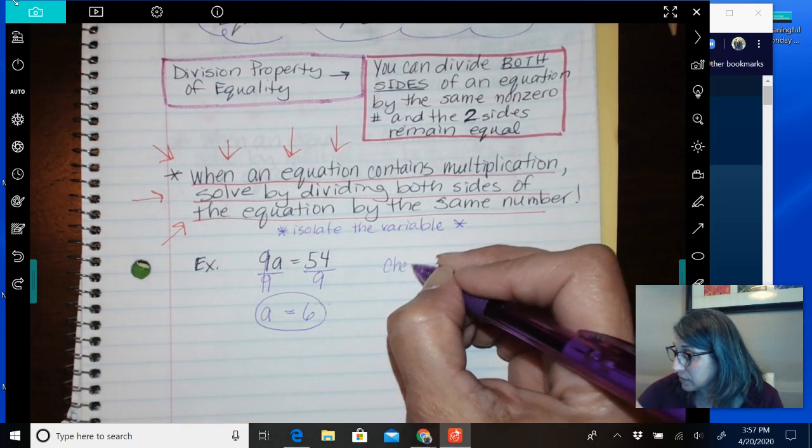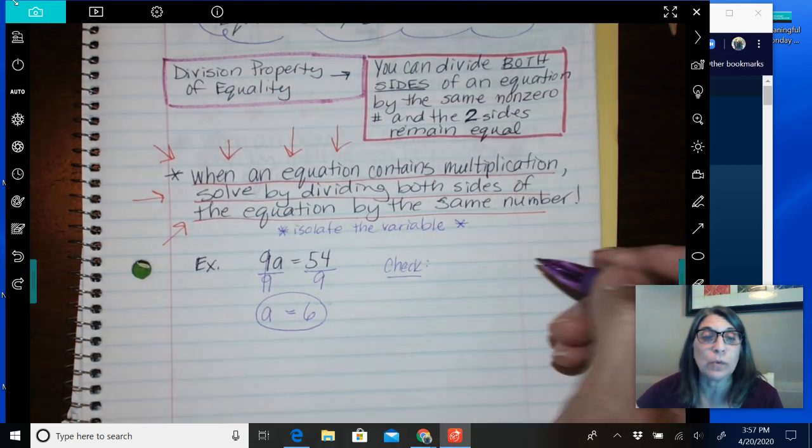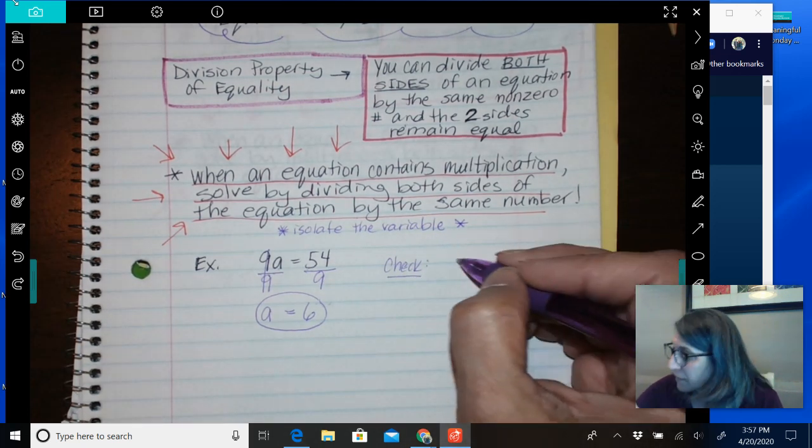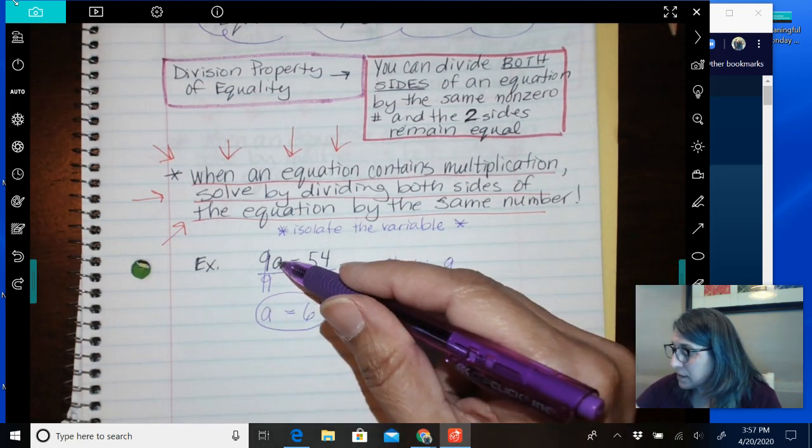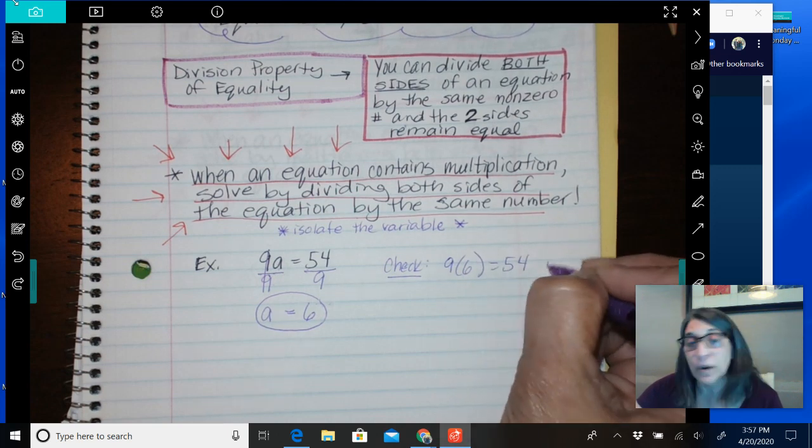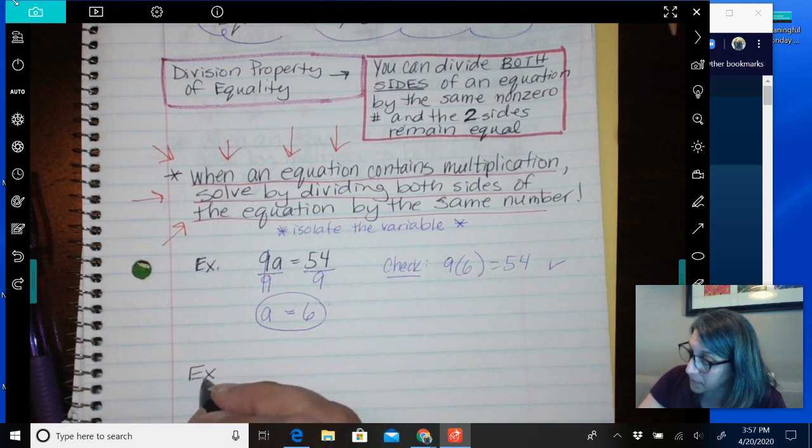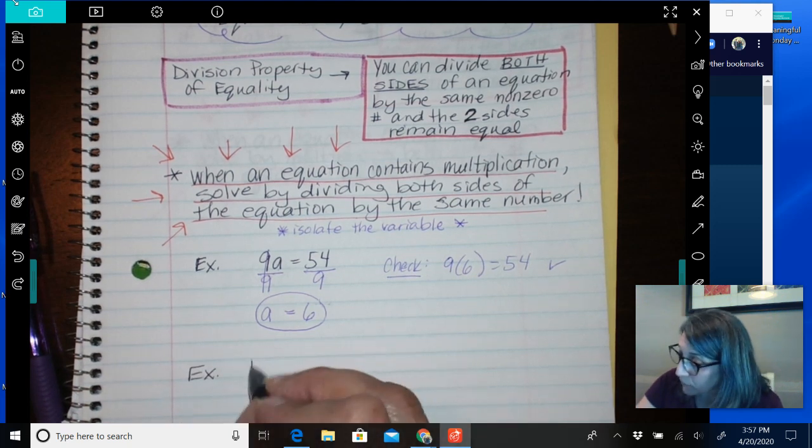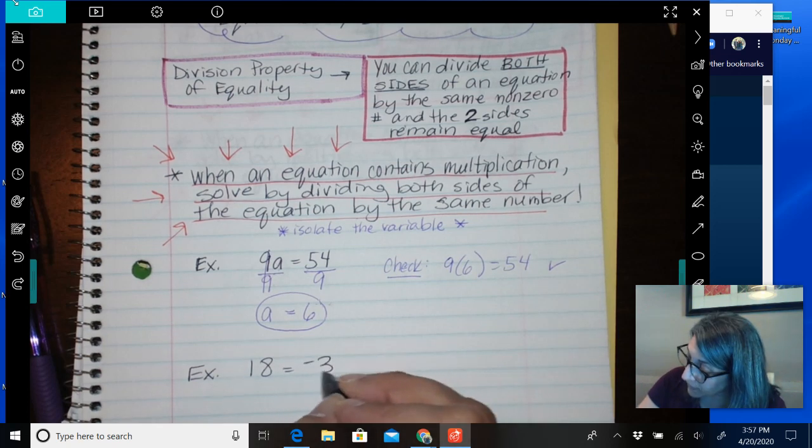Then you can check your answer, and you're going to have to do this a lot next year. So we'll do it with some of these. If I do 9, and I substitute in this 6 for a, and I know that that's correct. Let's try another example. I'm going to work a few, I'll have you pause it and work a few.